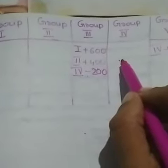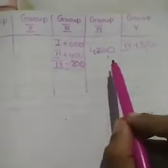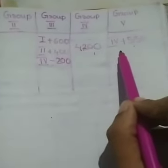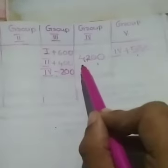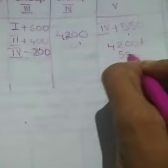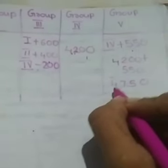They say the fourth group got 4,200 rupees — that is directly given. Now, how much did the fifth group get? The fifth group got 550 rupees more than the fourth group. That means the fifth group got 4,200 plus 550 rupees, which equals 4,750 rupees. The amount for Group 5 is 4,750 rupees. What about the third group? The third group got 200 rupees less than the fourth group, so 4,200 minus 200 equals 4,000.